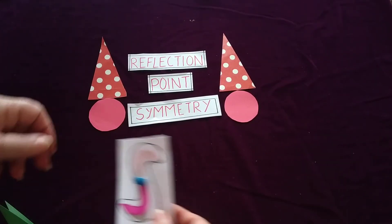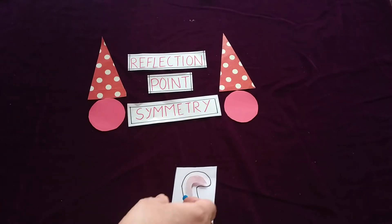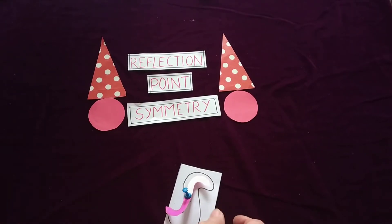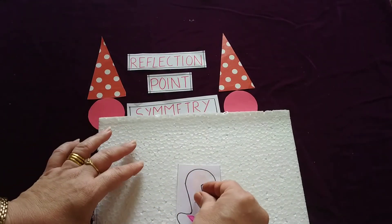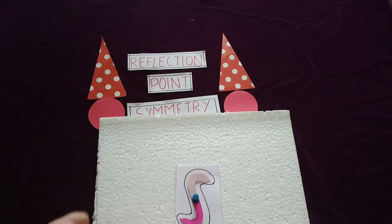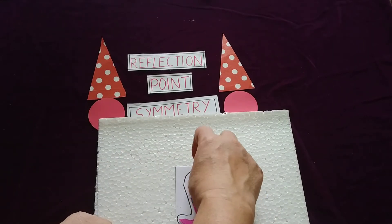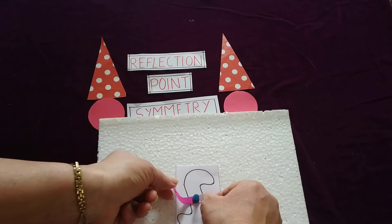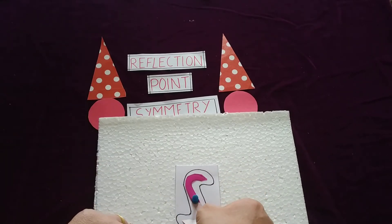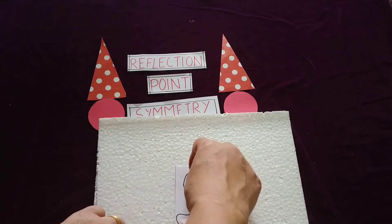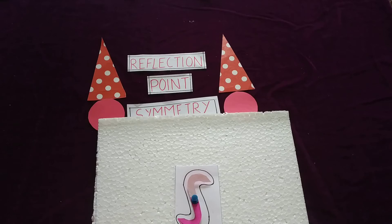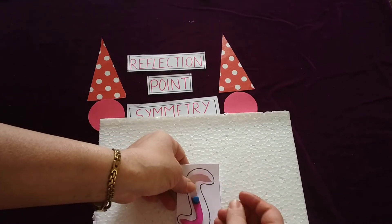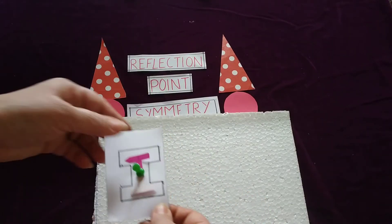Now I am taking a few examples. Here is your letter S. Rotate it 180 degrees or upside down — you can see the same letter. This is one time and the second time also. So the order of rotation is 2 for the letter S, and here we can find point symmetry.